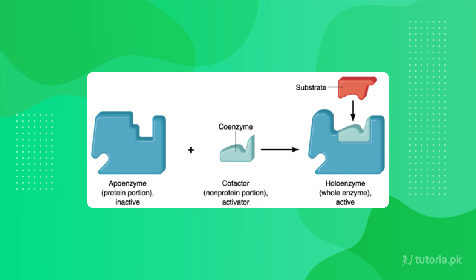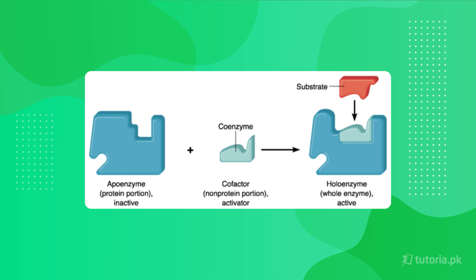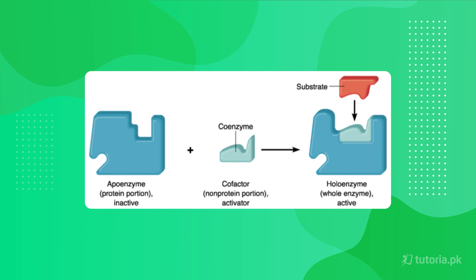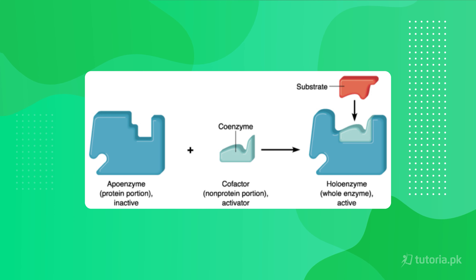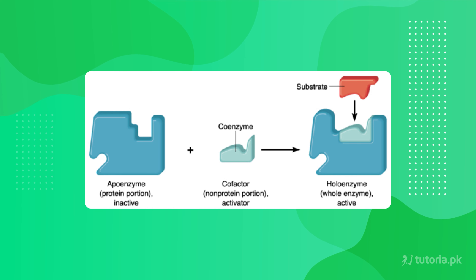As you can see in the diagram on screen, the enzyme without a cofactor is incomplete and inactivated — we call it the apoenzyme. When the cofactor is added, the enzyme becomes activated and we call it the holoenzyme. The holoenzyme then carries out the reaction by binding to the substrate.